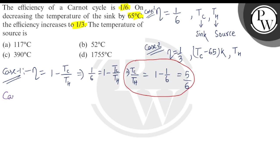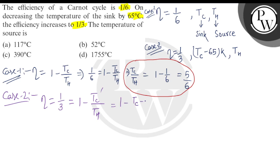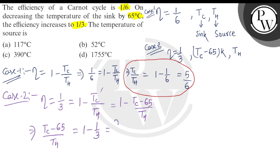For Case 2, efficiency is equal to 1/3, which equals 1 minus TC prime divided by TH. TC prime is equal to TC minus 65 Kelvin. So: 1/3 = 1 − (TC − 65)/TH, which gives us (TC − 65)/TH = 1 − 1/3 = 2/3.